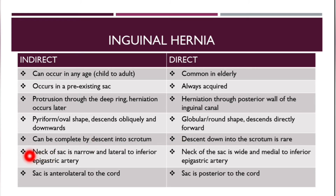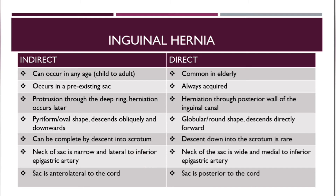In indirect hernia, the neck of the sac is narrow and lateral to the inferior epigastric artery. In direct hernia, the neck of the sac is wide and medial to the inferior epigastric artery. In indirect hernia the sac is anterolateral to the cord, and in direct hernia the sac is posterior to the cord.